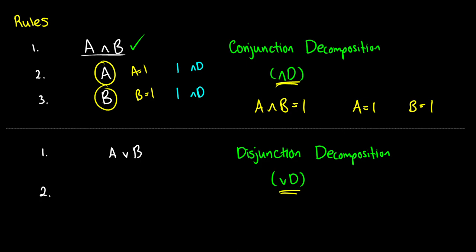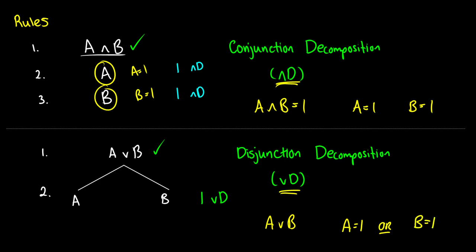What about A or B? This time we have branching paths — one path going left and one going right. The left path gives us A and the right path gives us B, and we justify this as 'or decomposition.' A or B is true if A is true or B is true. So we go into different branching paths: situation one where A is true, and situation two where B is true. Those are conjunction and disjunction decomposition — our two basic rules.